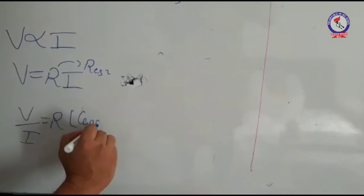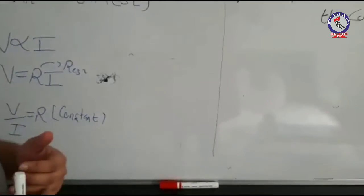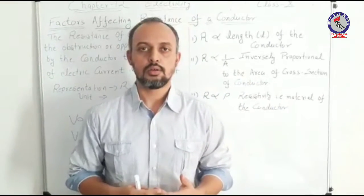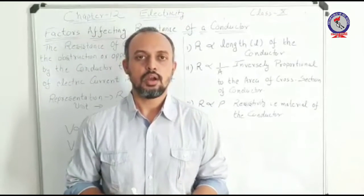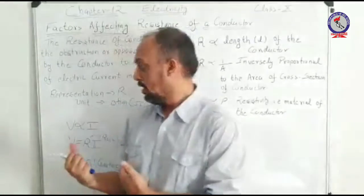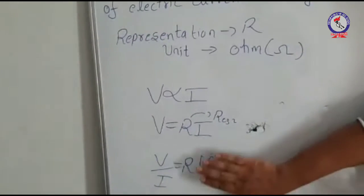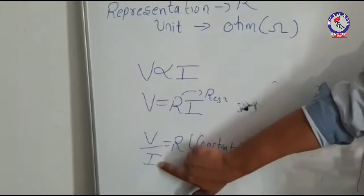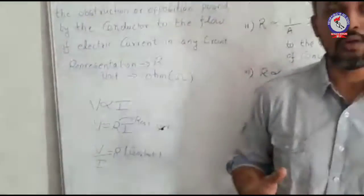So we had observed that V by I equals R, which is actually a constant. But going through practical observations, we had observed that on varying certain parameters, different values of current were measured by the instrument. As you can see in this expression, resistance is also dependent on current. If the resistance of the conductor is varied, then the current will also be varied.